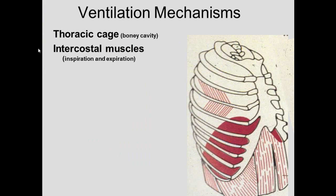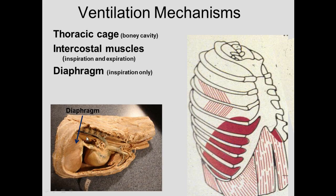To ventilate, you have a thoracic cage — a bony cavity attached at the backbone with intercostal muscles between the ribs. Some muscles pull the rib up, others pull it down; these are the internal and external intercostal muscles. Since both sets work, they contribute to both inspiration and expiration as they increase or decrease the size of the bony cavity. There is also a diaphragm, visible here in a dog specimen with the thoracic cage removed.